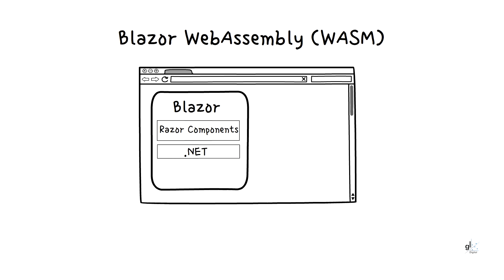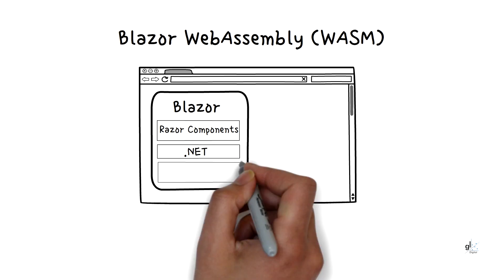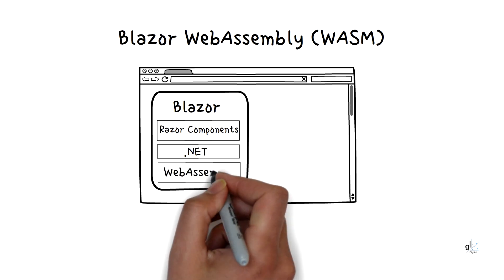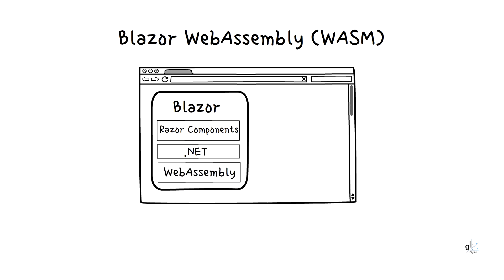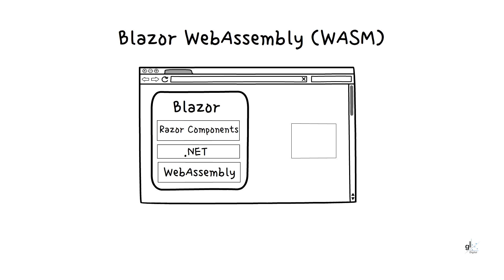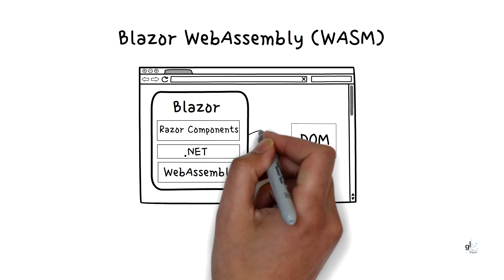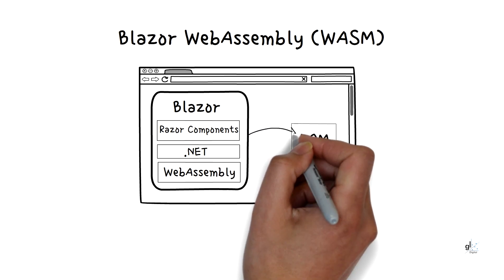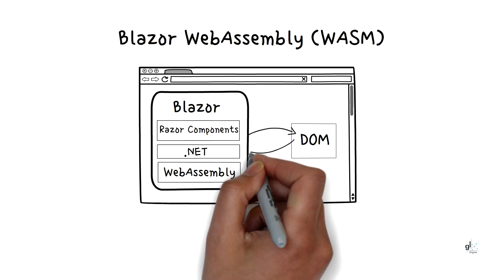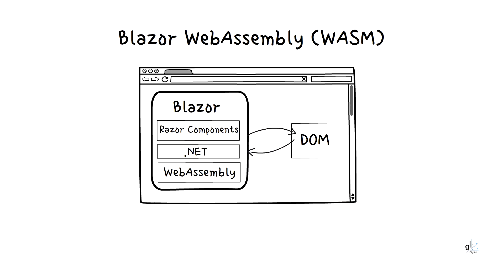There's no .NET server-side dependency after the app is downloaded from the server, so the app remains functional if the server goes offline. Client resources and capabilities are fully leveraged. Work is offloaded from the server to the client. An ASP.NET Core web server isn't required to host the app. Serverless deployment scenarios are possible. Blazor WebAssembly apps can be delivered via a content delivery network (CDN), for example Azure CDN.